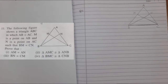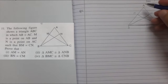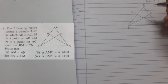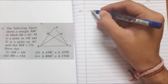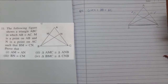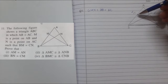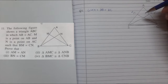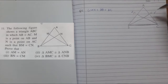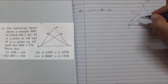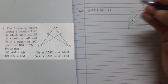We have triangle ABC in which AB equals AC — marking both sides equal. So in the given, we write AB equals AC. Second, M is a point on AB and N is a point on AC. We are also given that BM equals CN.